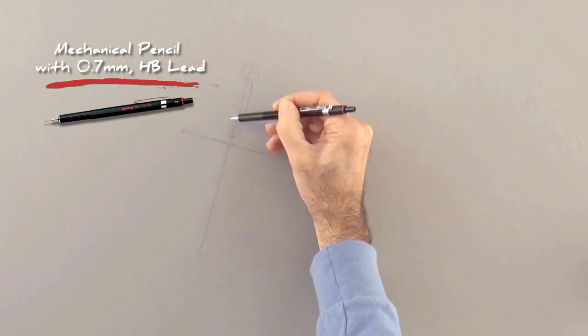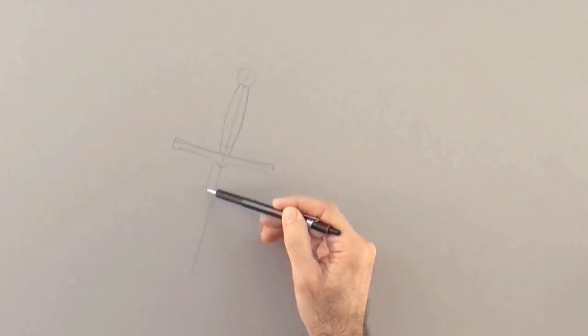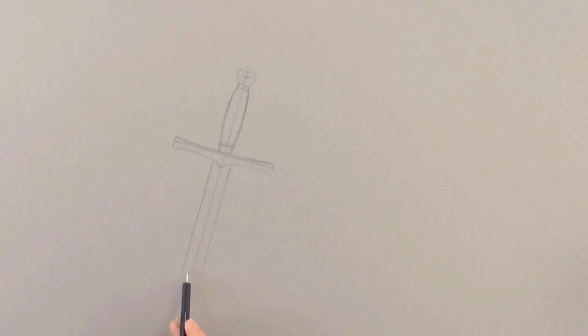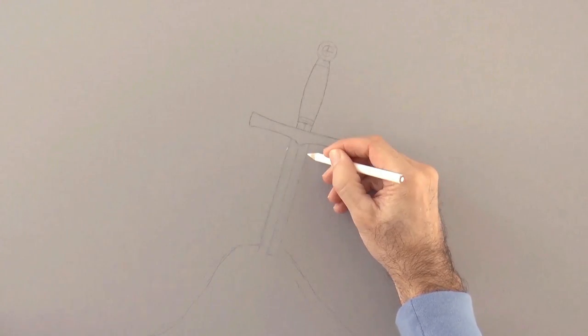We do the handle and the rest of the sword. I am sketching with pencil so as to be able to erase any mistakes. Good! Now we start coloring!